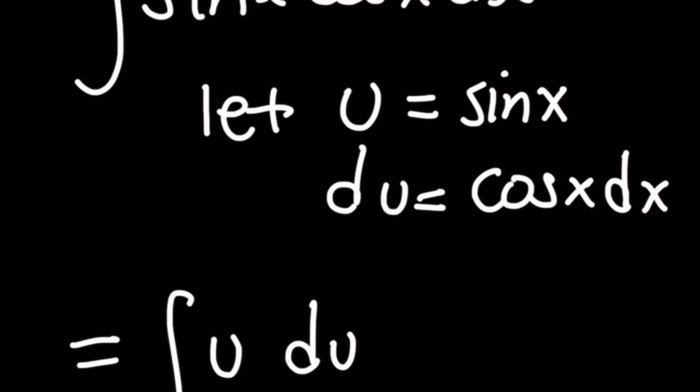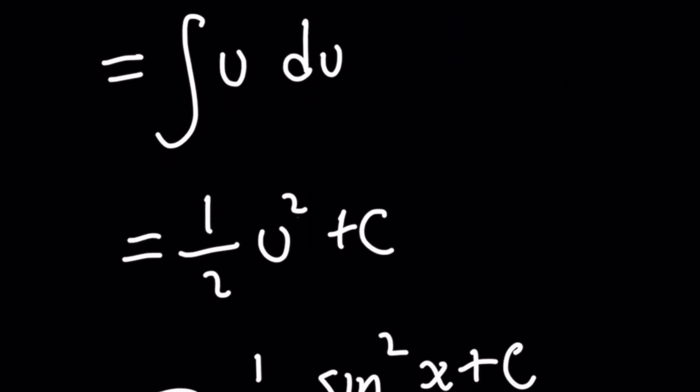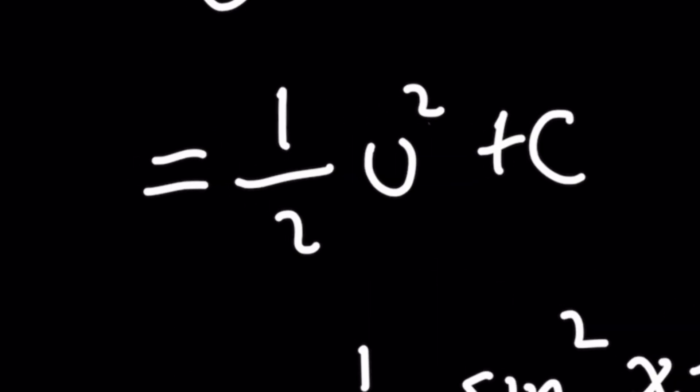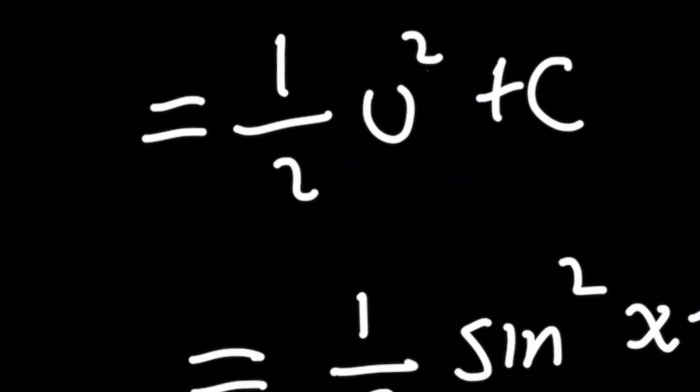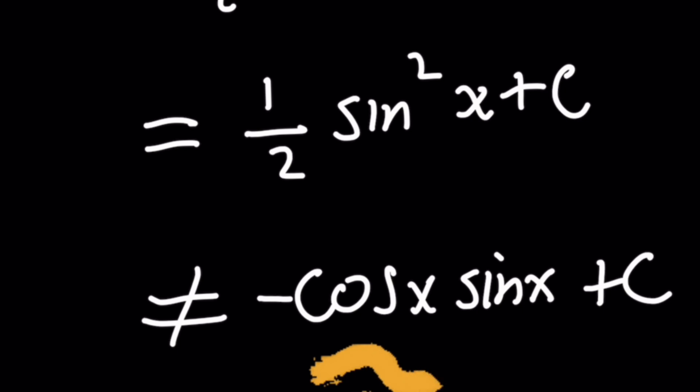So notice how u is equal to sine of x, you have to make sure that in your final answer, you sub back in the value of u as sine of x. So we get an answer that's one half sine squared of x plus C. And it's very clear that that does not equal the first attempt we made, which is negative cosine of x sine of x plus C.